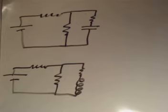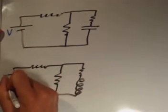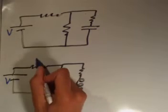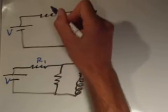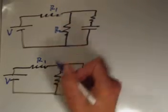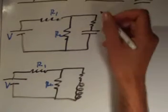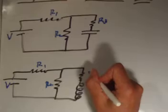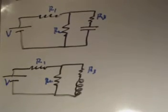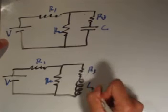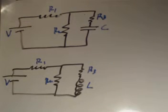The circuits are identical other than the fact that one has a capacitor and the other has an inductor. On both circuits, I have a DC battery supplying some voltage V, a resistor R1, R2, and R3. The only difference is that this circuit has a capacitor and this one has an inductor. What we'd like to look at is the short-time and long-time behavior of these systems.